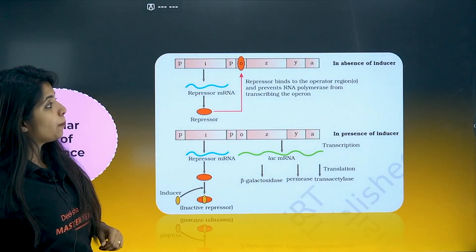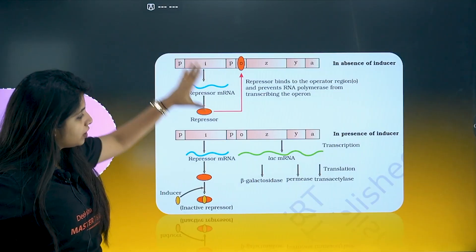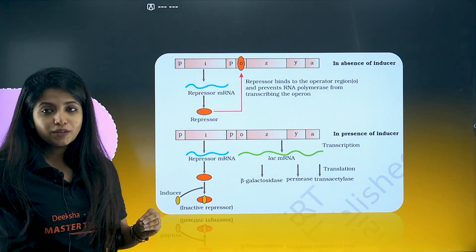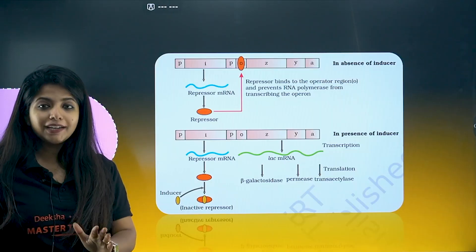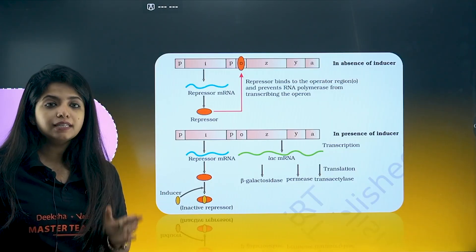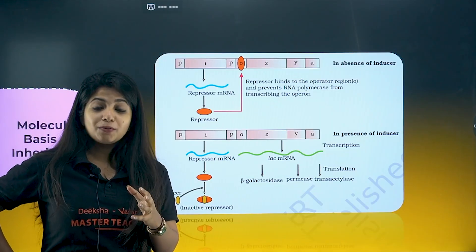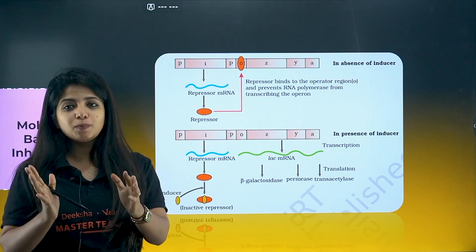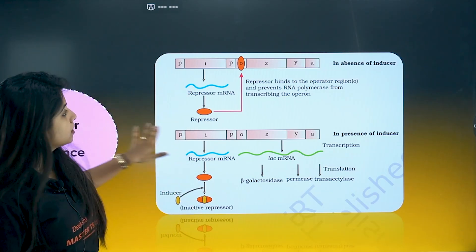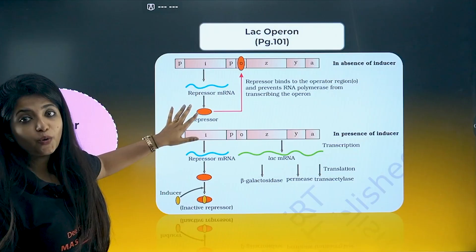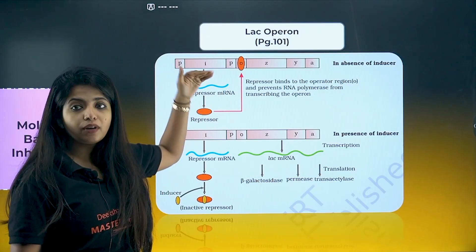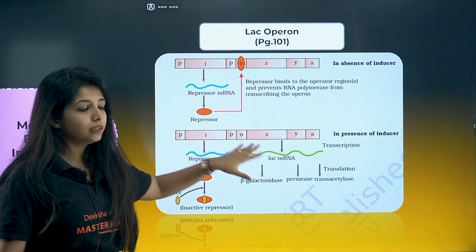Next is the lac operon — very, very important. Every single thing given here is important along with the procedure. Make sure you read it or watch the two-marker, three-marker, and five-marker videos. The lac operon is on page number 101. This can come as a five-marker question where you have to explain and draw it as well.